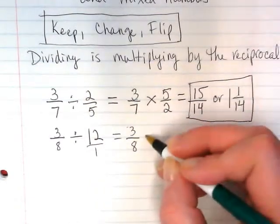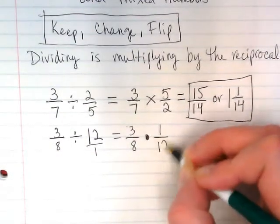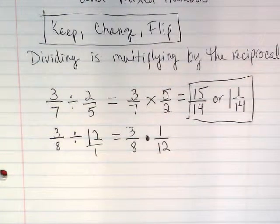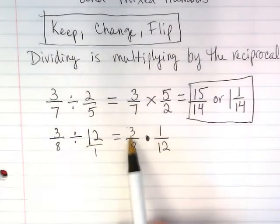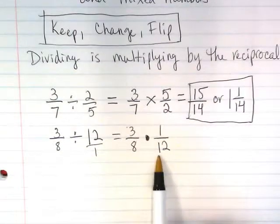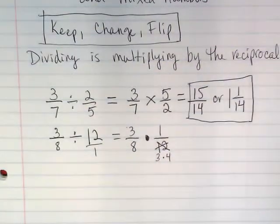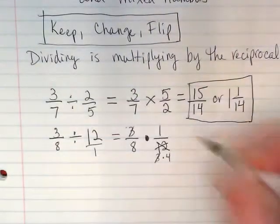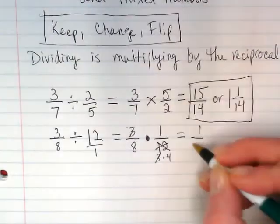And then we can do our keep change flip. We're going to keep 3 eighths. We're going to change the symbol to a multiplication, and we're going to flip 12 to be its reciprocal of 1 twelfth. And remember our little shortcut when we're multiplying? We can look for reducing it before we multiply. When I see a 3 in the numerator and a 12 in the denominator, I want to rewrite this 12 as 3 times 4. And then I can reduce it by taking away these 3's before I multiply. And I'm going to get 1 over 32.